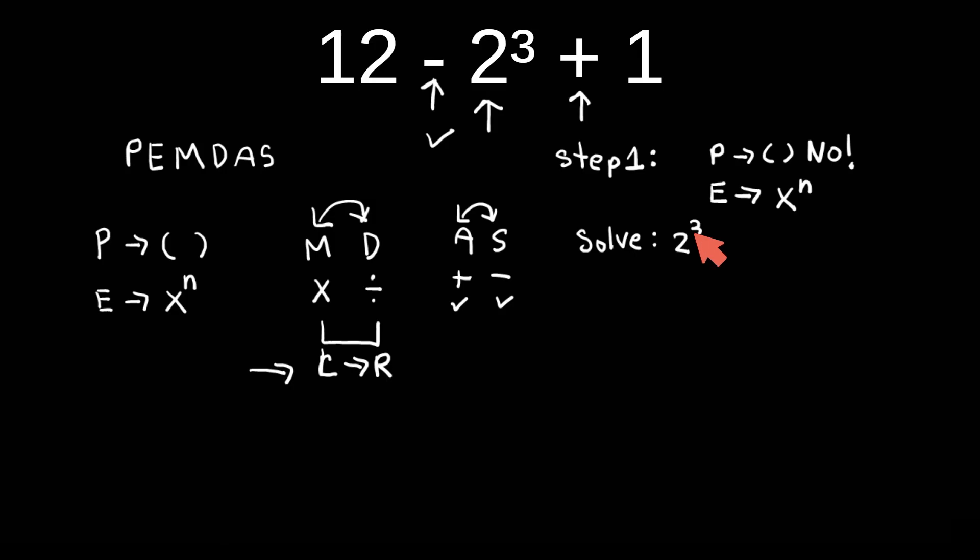If you look closely, that exponent is 2³. The 3 power simply means you're multiplying 2 three times by itself. If you solve it, you get 2 times 2 times 2 equals 8.